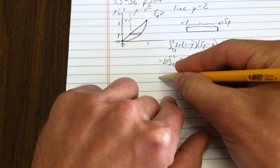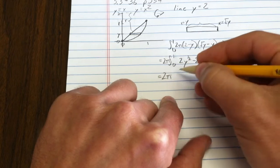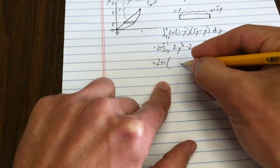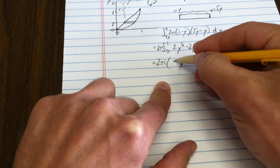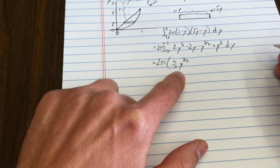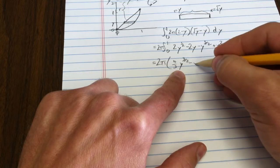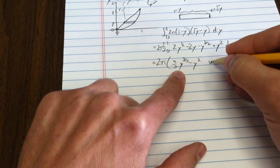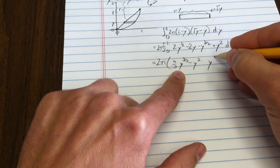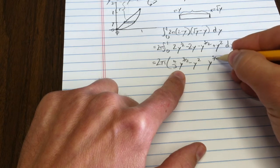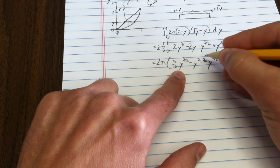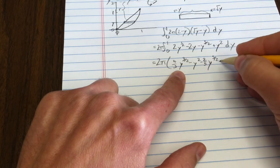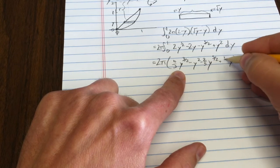Integrating that mess. Let's see what I've got. Here, I get y to the 3 halves. The coefficient is now 4 thirds. Here, I get y squared. Here, I get y to the 5 halves. And I've got to put in a negative 2 fifths. Here, I get y to the 3, and I put in a 1 third. Evaluating from 0 to 1.